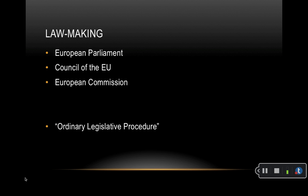There are three main institutions involved in EU legislation. The European Parliament, which represents EU citizens and is directly elected by them. The Council of the European Union, which represents the governments of the individual member countries — with the presidency shared by member states on a rotating basis. And the European Commission, which represents the interests of the Union as a whole. Together, these three institutions produce through the ordinary legislative procedure the policies and laws that apply throughout the EU. In principle, the Commission proposes new laws, the Parliament and Council adopt them, the Commission and member countries implement them, and the Commission ensures that the laws are properly applied.